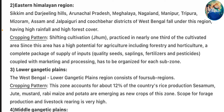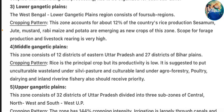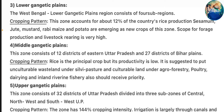Zone 3 – Lower Gangetic Plains: The West Bengal Lower Gangetic Plains region consists of four sub-regions. This zone accounts for about 12% of the country's rice production. Sesimum, jute, mustard, rabi, maize, and potato are emerging as new crops of this zone. Scope for forage production and livestock rearing is very high.